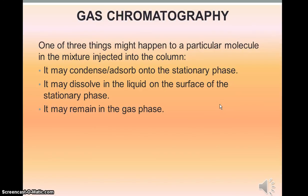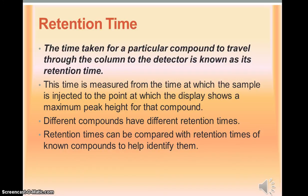When you inject your mixture, the components might condense or absorb onto the stationary phase, they might dissolve in the liquid, or they might remain as gas and travel through very quickly with the carrier gas. The retention time tells us the time it takes for a particular compound to travel from the column, through the column, to the detector. It's measured from the time at which the sample's injected, and when it appears at the other end there'll be a peak for the different compounds. Different compounds will have different retention times. We can compare retention times with retention times of known compounds to help us identify them.